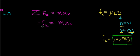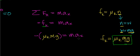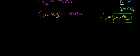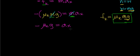Substituting this expression for kinetic friction into Newton's second law in the x-direction, we get: negative (mu_k times mass times g) equals mass times acceleration in x. Notice there is a mass term on both sides of the equation, so we can cancel them. This gives us: acceleration in x equals negative mu_k times g.